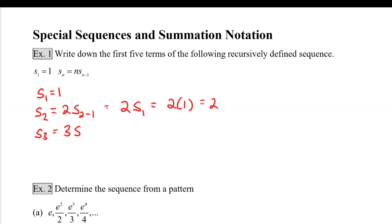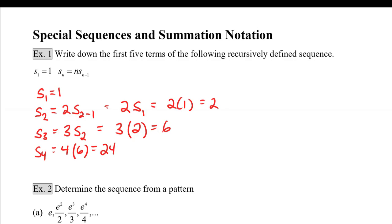That's 2 times 1, which equals 2. s sub 3 is equal to 3 times s sub 2, which is 3 times 2, which is 6. s sub 4 is 4 times s sub 3, which is 6, giving us 24. And s sub 5 is 5 times 24, which equals 120.